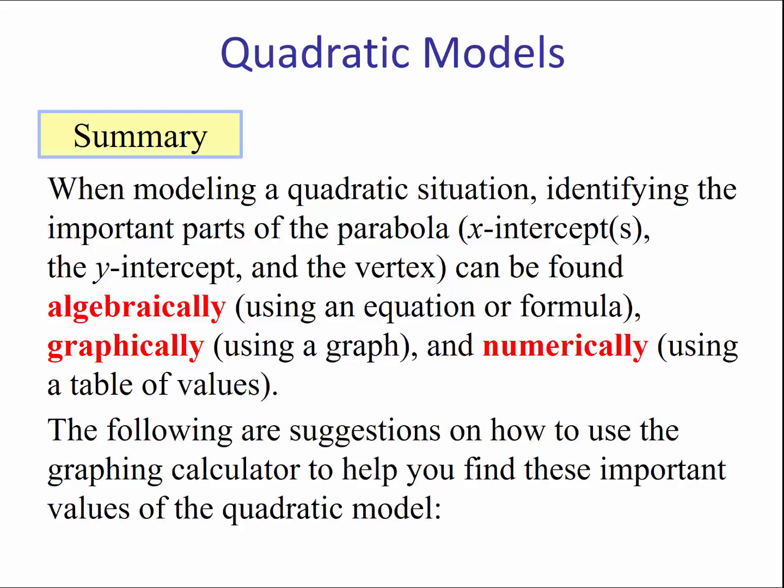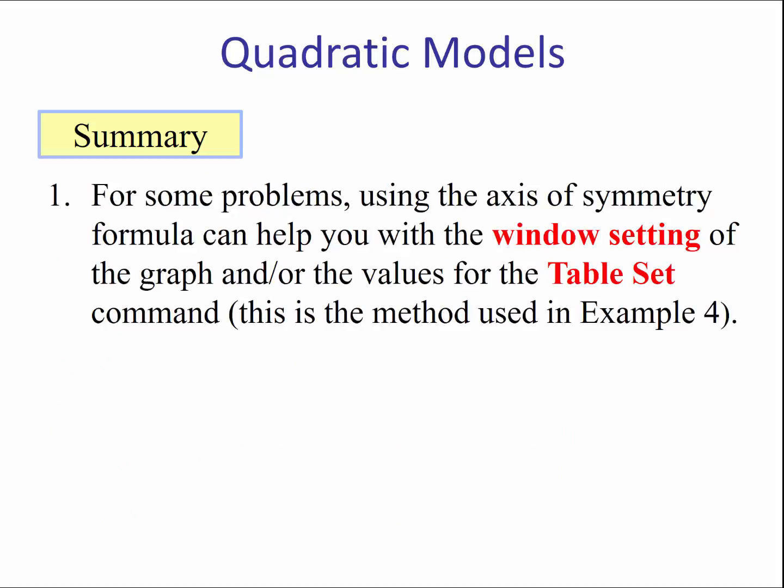Number one: for some problems, using the axis of symmetry formula can help you with the window settings of the graph and/or the values for the table set command. This method was used in example 4.